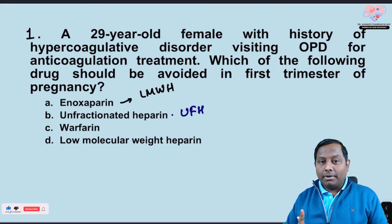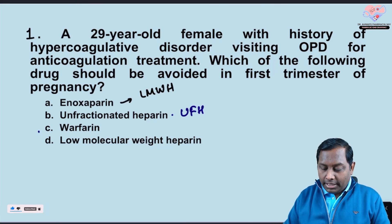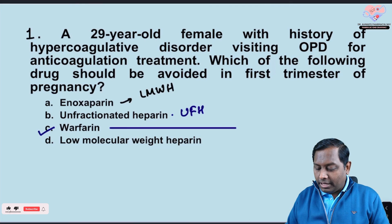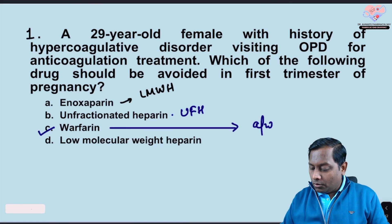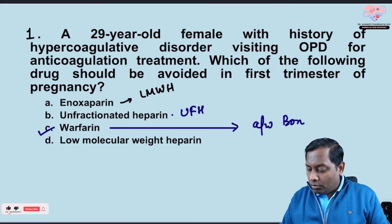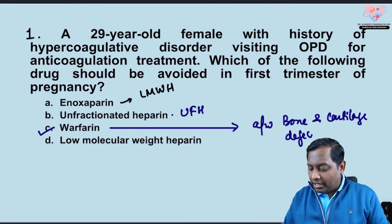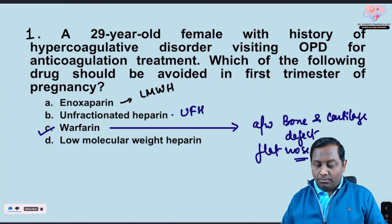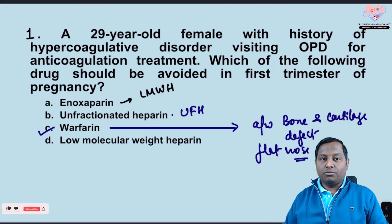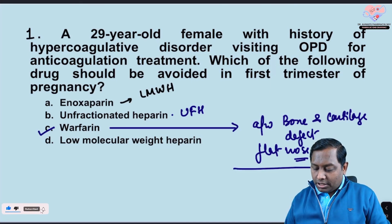Warfarin is something that should be avoided in the first trimester. Warfarin is associated with bone and cartilage defects — flat nose and cartilage defects, with multiple abnormalities possible. Bone defect and cartilage defect are the most prominent features with warfarin, and we call this Conradi syndrome.